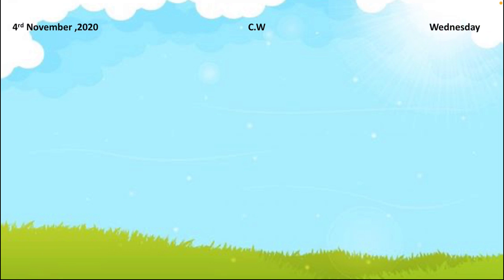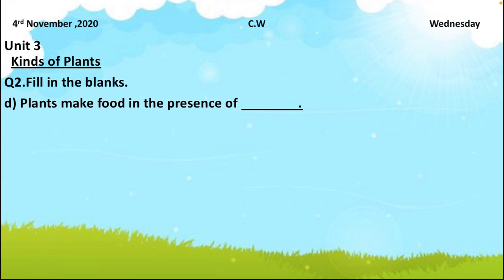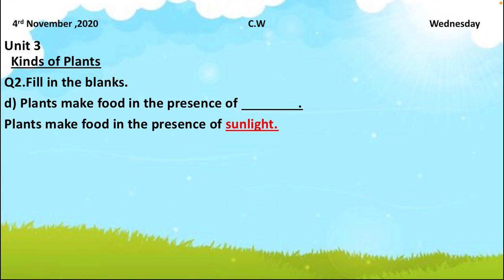Statement D: plants make food in the presence of blank. Plants make their food in the presence of chlorophyll in the leaves, and also sunlight. So the answer is: plants make food in the presence of sunlight.